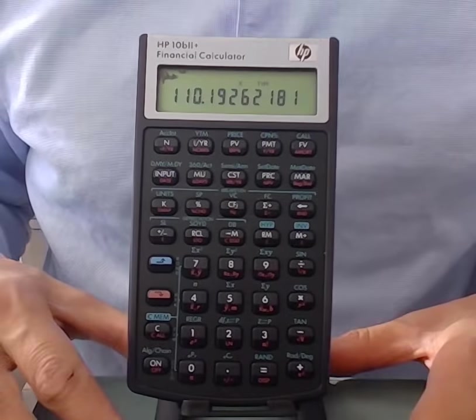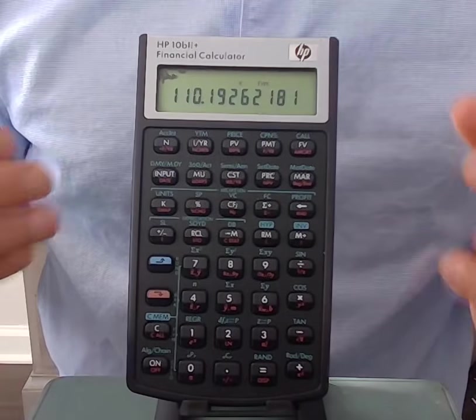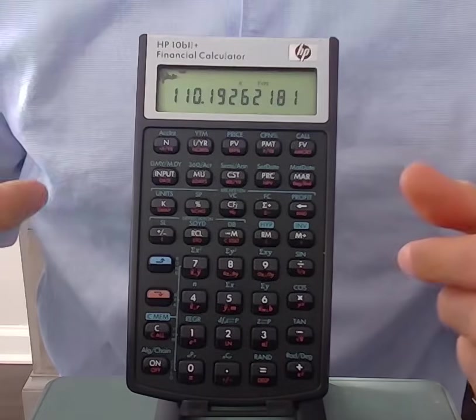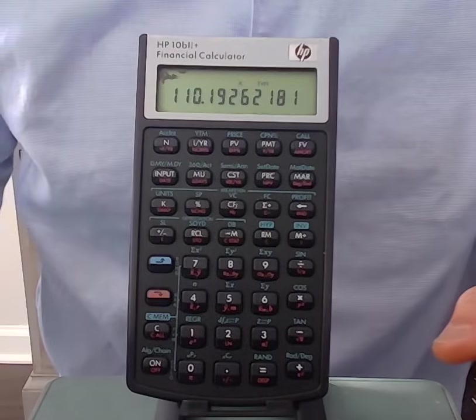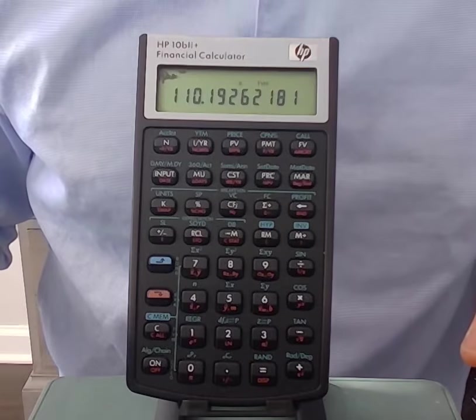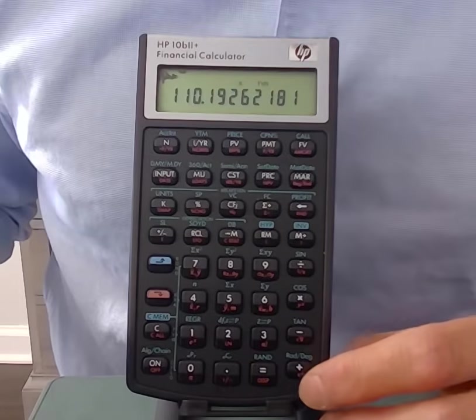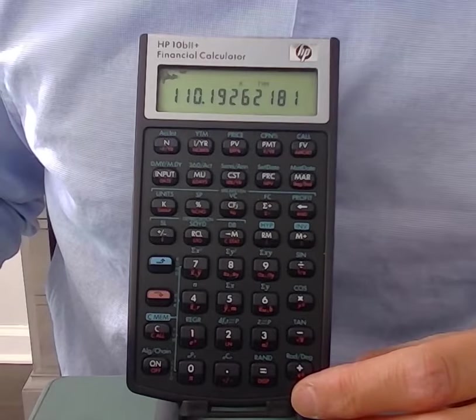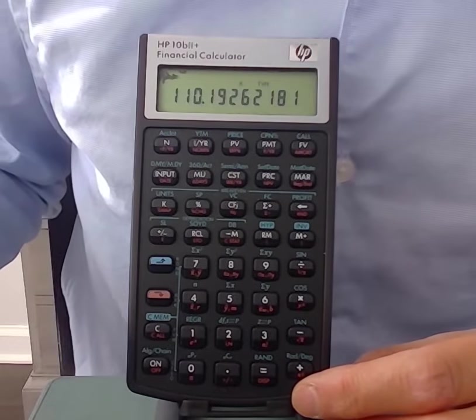Now the nice thing about this calculator is that these dollar amounts are still stored as the period zero through three cash flows. We can calculate other things on this cash flow stream. And the last thing we want to go over is how would you calculate the IRR or internal rate of return.